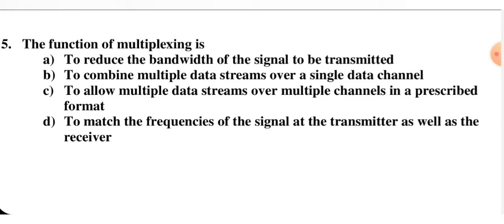Now the function of multiplexing: to reduce bandwidth, to combine multiple data streams over a single data channel, to allow multiple streams over multiple channels, or to match frequencies. Multiplexer means many signals come together and transmit through one channel — parallel to serial, multiple inputs to single output. So B is the right option.